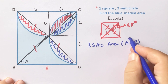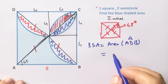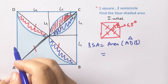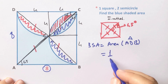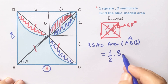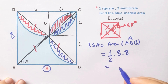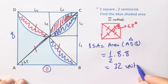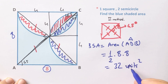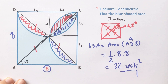The area of triangle ADB equals half of 8 times 8. So the blue shaded area equals 32 unit square. Thanks for watching, and if you want more videos like this, please subscribe to my channel.